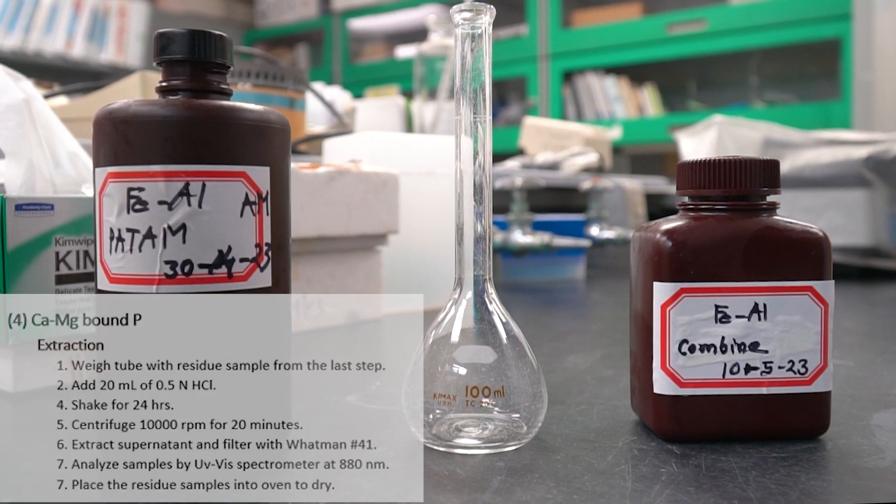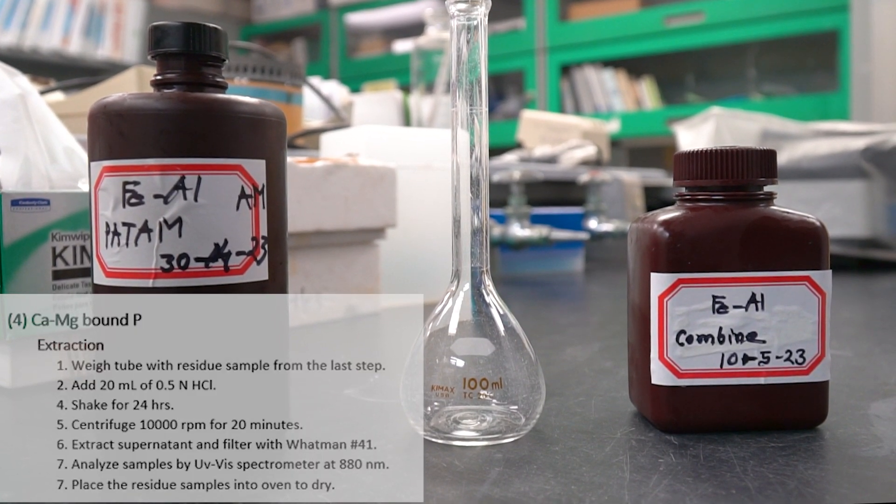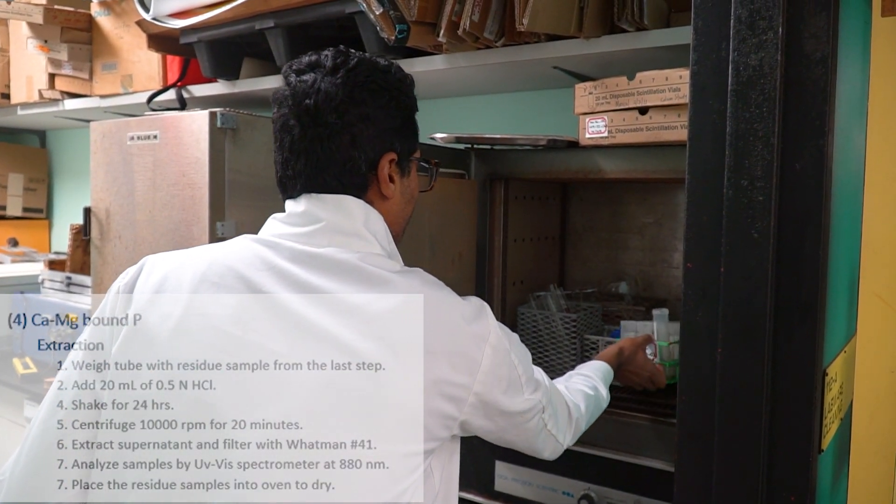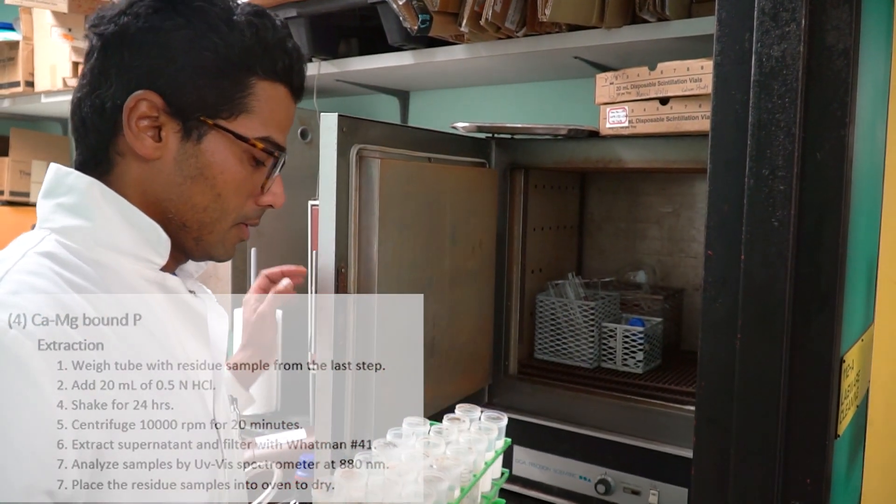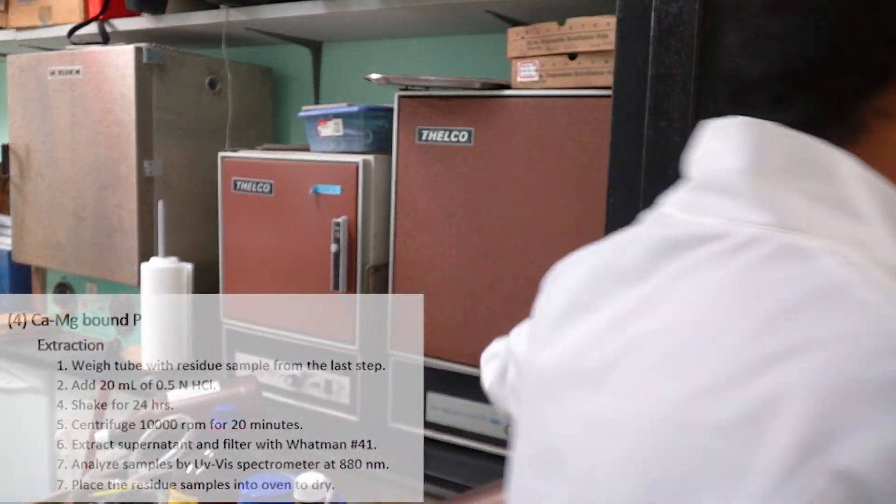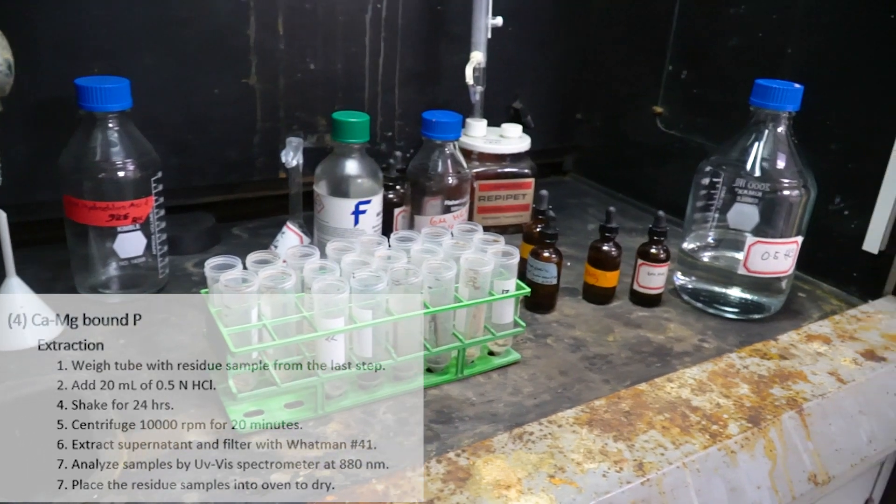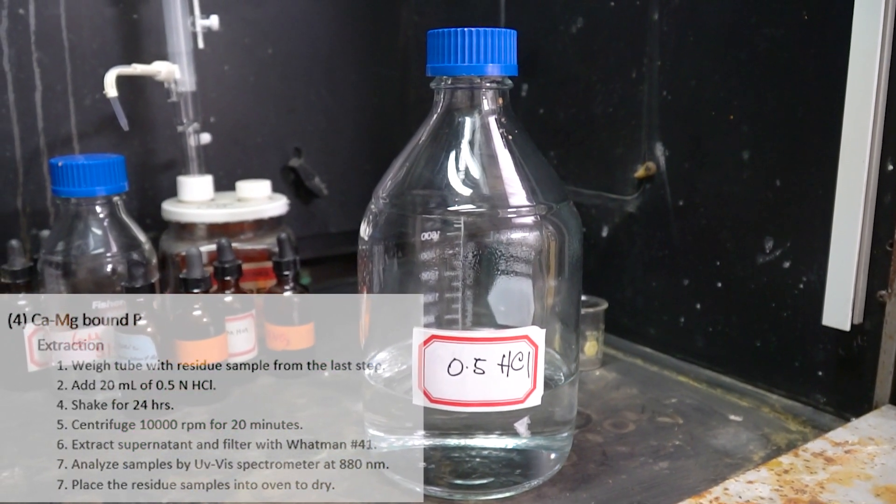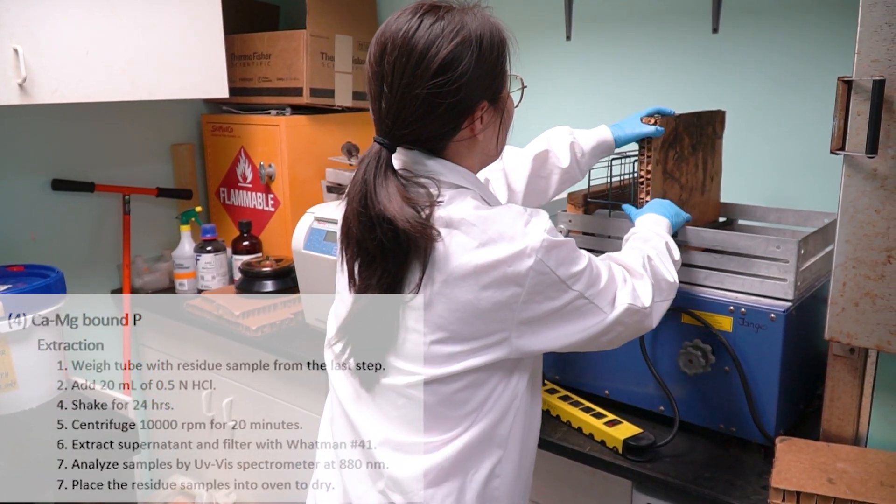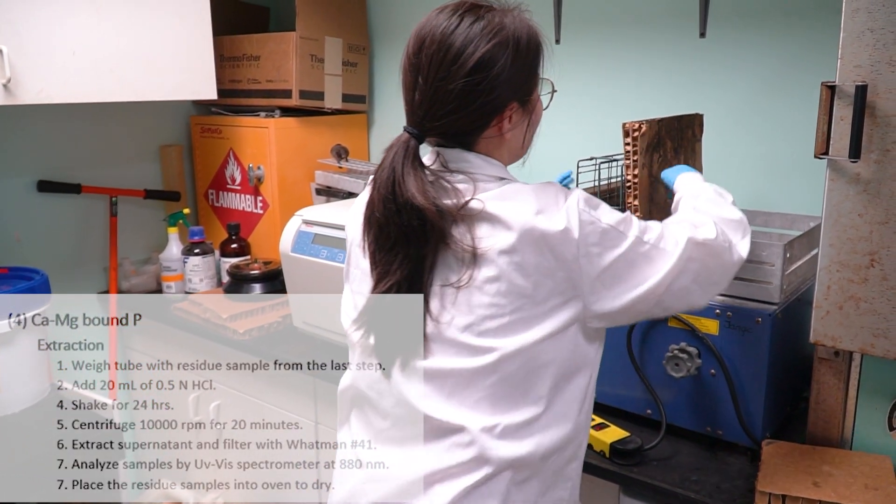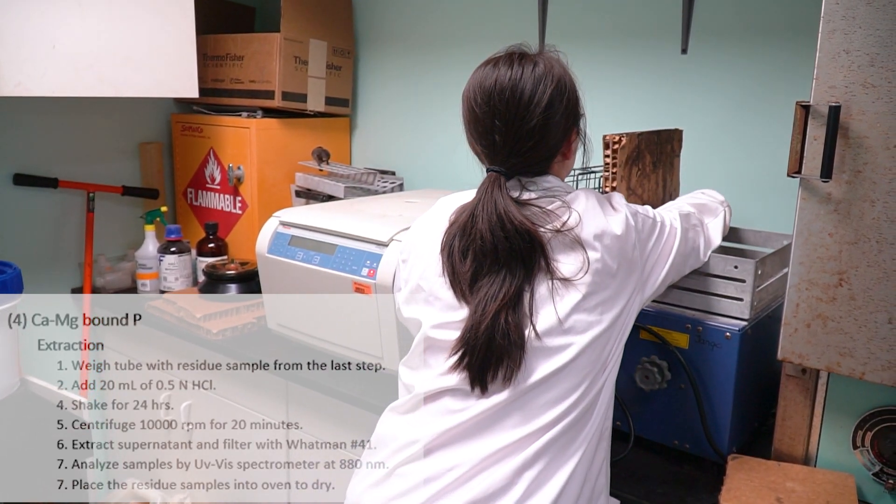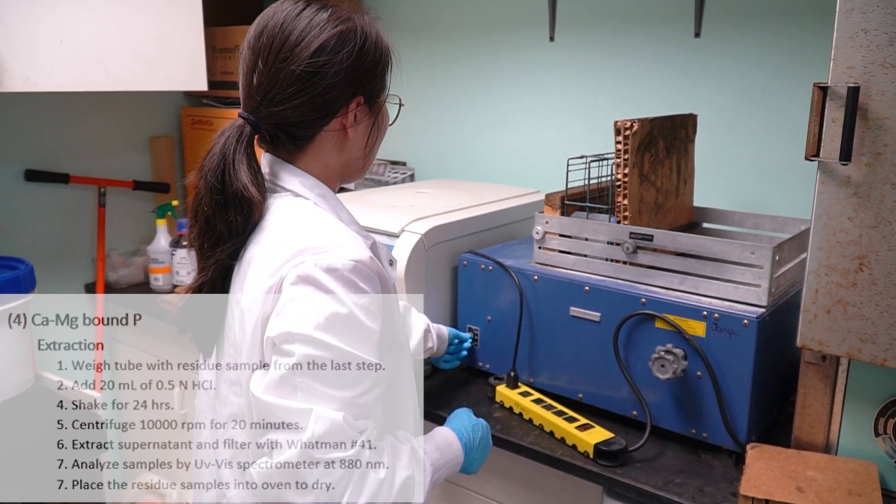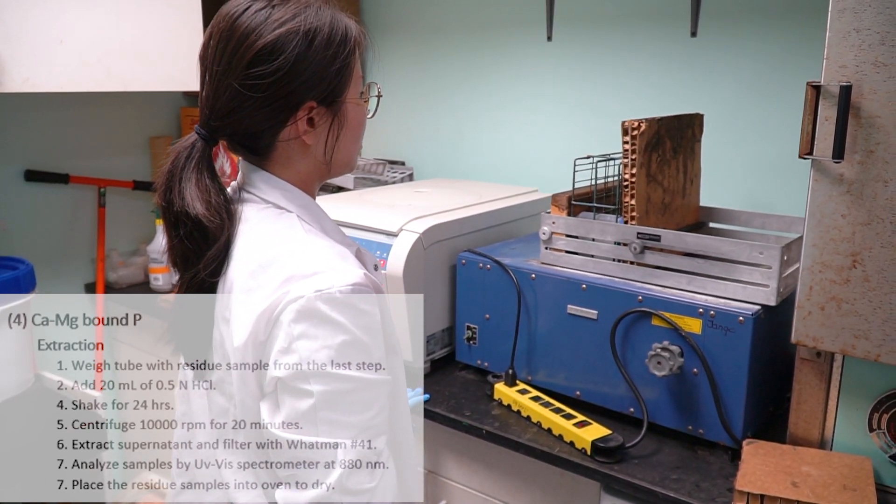For calcium magnesium bound P extraction, first we have to take the tubes kept in the oven. We take out the tubes from the oven, then weigh them up. Then we have to add 20 milliliter of 0.05 normal HCl, followed by shaking for 24 hours. Then we have to centrifuge the samples at 10,000 rpm for 20 minutes.